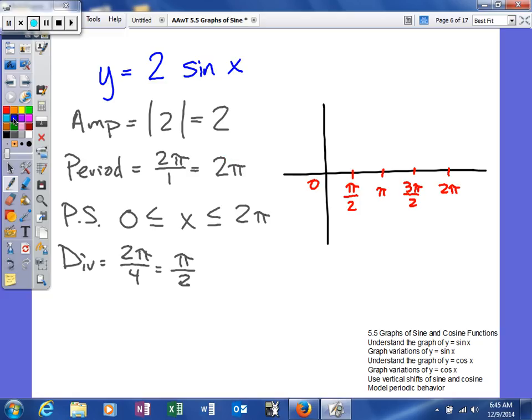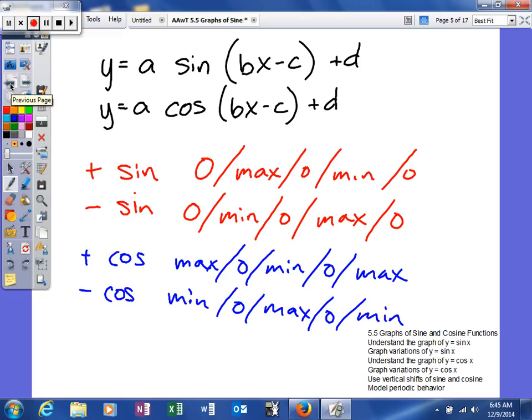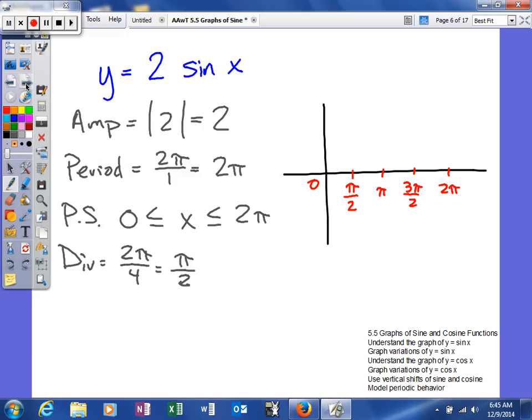So now we're actually going to graph our function. If you notice, our sine value is going to be positive. So positive sine goes 0, maximum, 0, minimum, 0. So at 0, we're going to be at 0. So these are the x's. The values that we found in the last one are actually our y values.